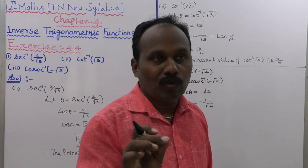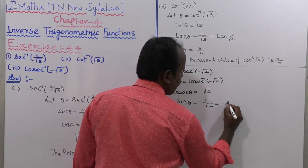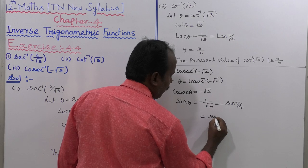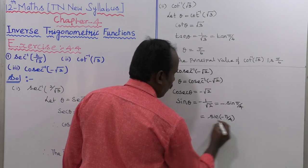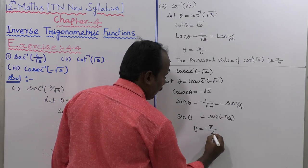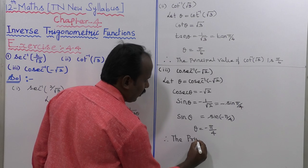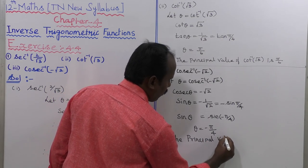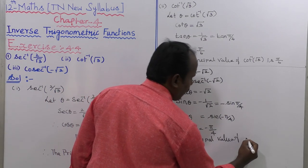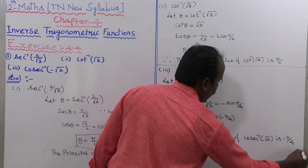So 1 divided by root 2 equals sin of pi by 4. Therefore minus 1 by root 2 equals minus sin(pi by 4), which equals sin(minus pi by 4). So theta equals minus pi by 4. Therefore, the principal value of cosecant inverse of minus root 2 is minus pi by 4.